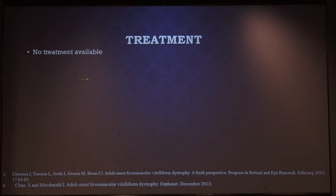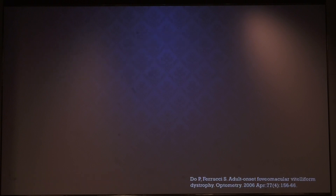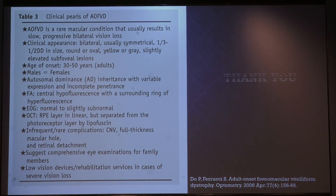Regarding treatment, there is no established treatment available. Gene therapy is a promising future option. If CNVM develops as a complication, anti-VEGF can be given. To summarize, AOFVD is a rare macular condition that usually results in slow progressive bilateral vision loss. Clinical appearance is bilateral, usually symmetrical, one-third to half disc diameter in size, round to oval, with age of onset around 30 to 50 years. There is equal sex predilection and autosomal dominant inheritance.